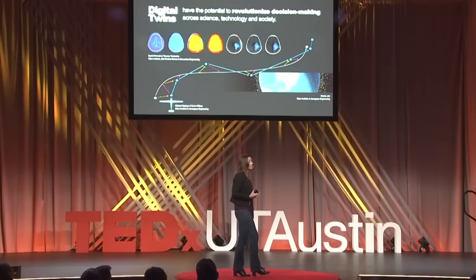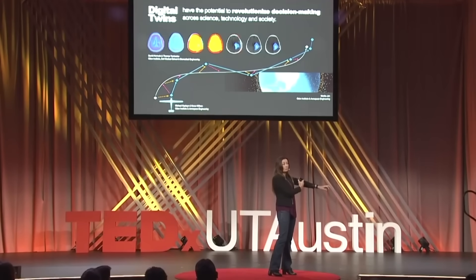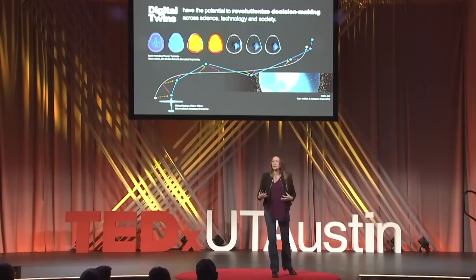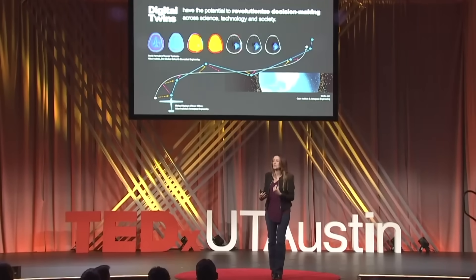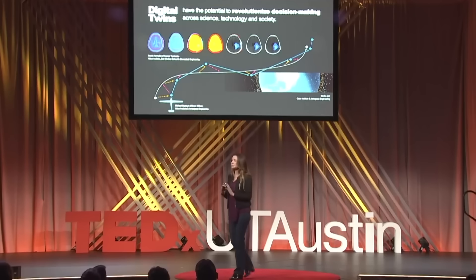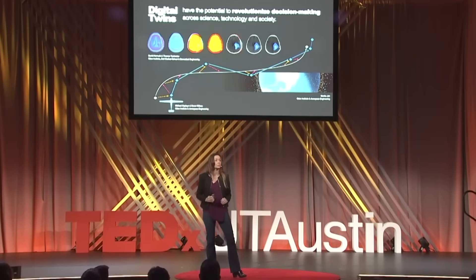One reason it's very difficult is because of the scales that these systems cross. If you think about my aircraft, damage at the microscopic level on the material on the wing translates across scale to impact the way the vehicle flies at the vehicle level. In medicine, changes at the very fine level — at the molecular or cellular level in our bodies — translate across scales to have impacts on us at the system level, at the human level. Computational models that resolve all of these scales, from the microscale all the way up to the system level, are computationally intractable. We can't solve them even with today's supercomputing power.